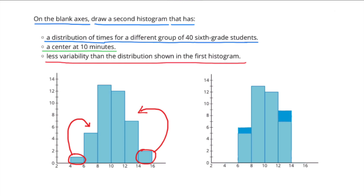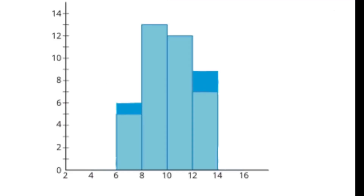To represent a distribution of times for a different group of 40 6th grade students, I took the column from 4 to 6 and placed it on top of the column from 6 to 8, and I placed the column on the right-hand side from 14 to 16 on top of the column for 12 to 14. We have the same number of students but a different distribution. The center is still at 10 minutes, and it has less variability — the first histogram ranged from 4 to 16, and the new histogram ranges from 6 to 14.